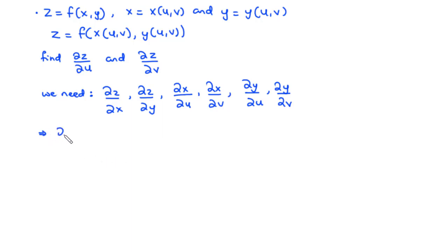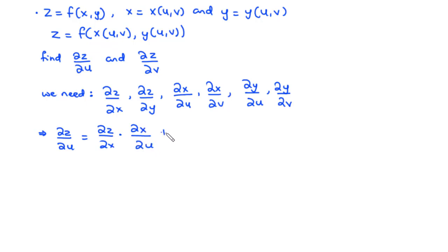To find the partial derivative of z with respect to u, we move from z to x — that is, partial derivative of z with respect to x times partial derivative of x with respect to u — plus we move from z to y, so partial derivative of z with respect to y times partial derivative of y with respect to u.